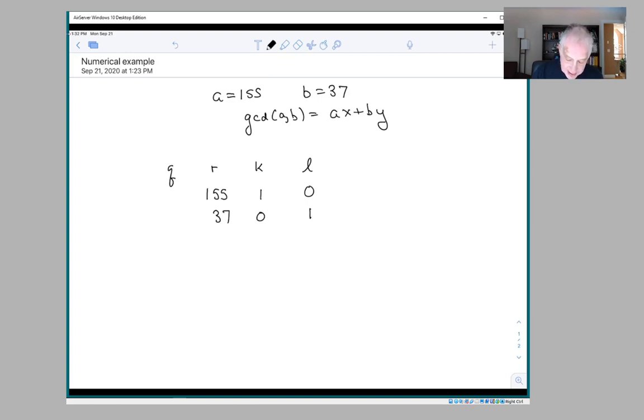The thing to notice is that at each stage, wherever we are in the row, K times A plus L times B is always going to equal the entry in the R column.